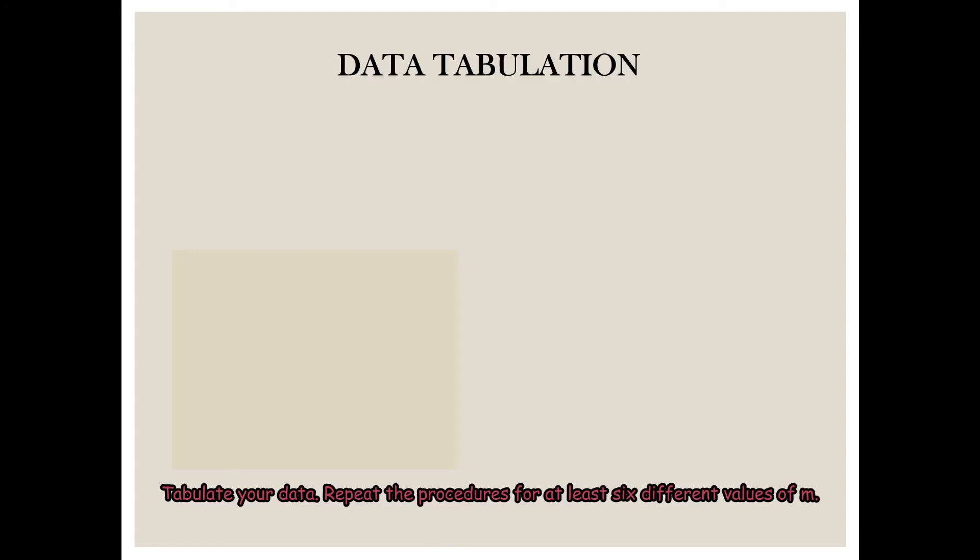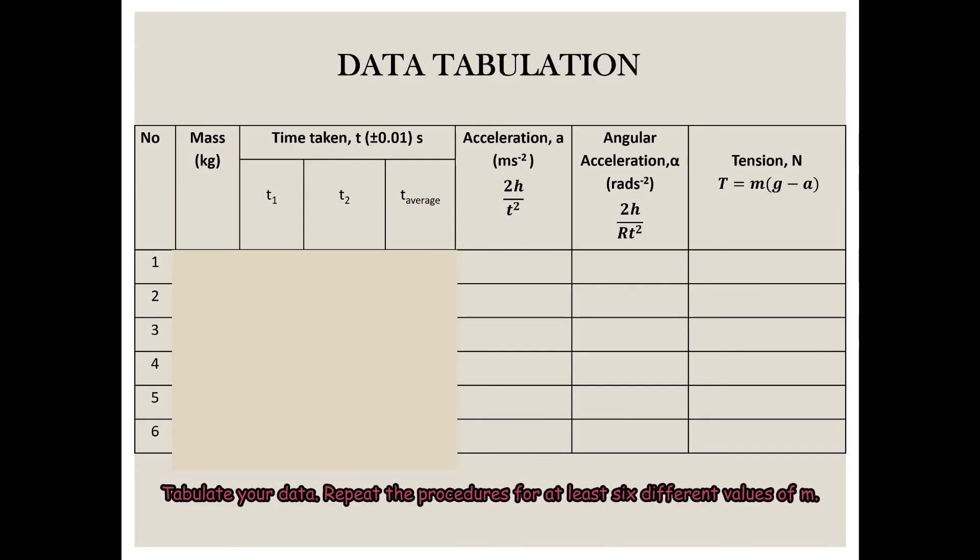Tabulate your data. Repeat the procedures for at least six different values of M. Calculate a, T, and alpha using equations 4.5, 4.6, and 4.7 respectively.